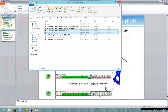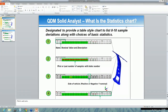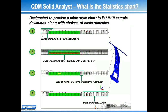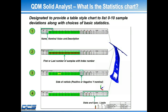Now into the statistics chart information. This is a tabular type of chart that was developed to give you your small sample analysis between zero and 10 samples. It gives you the raw data deviations along with your basic statistics. I've broken this down for you in four areas. In this green box here, we've got a description shown as well as the name of the feature and the nominal value.